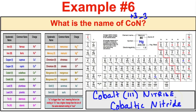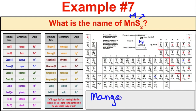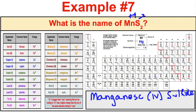For MnS₂: sulfide has a negative 2 charge, and 2 times negative 2 is negative 4. With only one manganese, it must have a positive 4 charge. The systematic name is manganese(IV) sulfide. The common name would be manganic sulfide, since it refers to the manganese ion with the higher of the two charges.